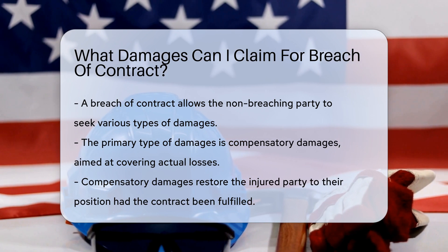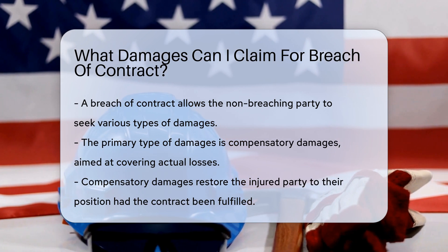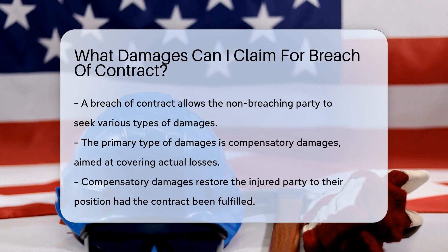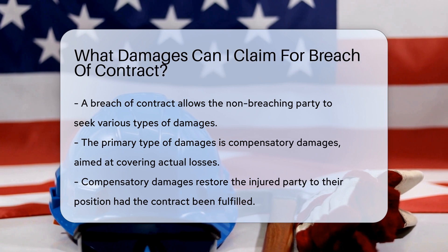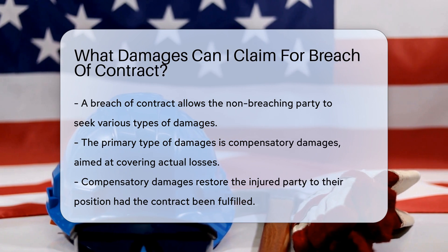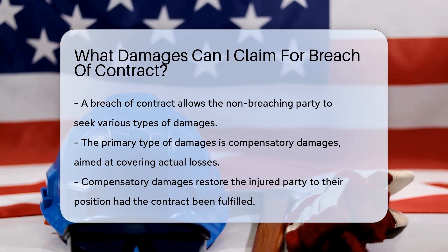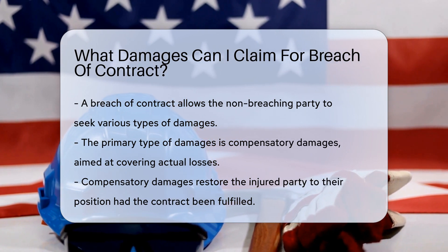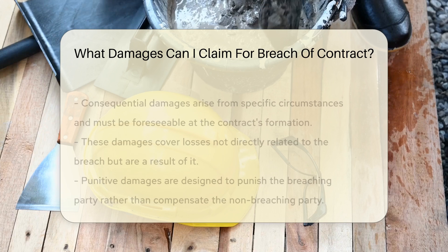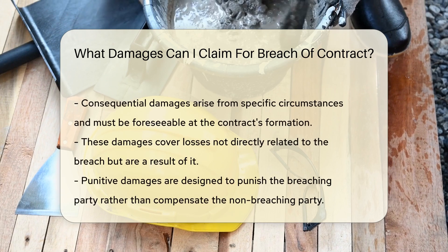The first type is compensatory damages. These are designed to cover the actual loss suffered and restore the injured party to the position they would have been in had the contract been fulfilled.